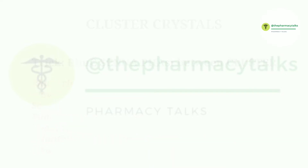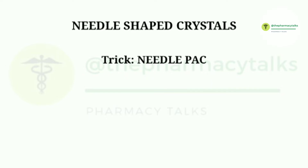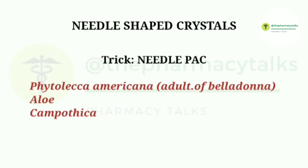Now let's talk about the other type of calcium oxalate crystals, which is needle-shaped crystals. The trick to remember the secondary metabolites of this type is 'Needle pack.' It includes Phytolacca americana — which is an adulteration of belladonna — aloe, and Campedica.